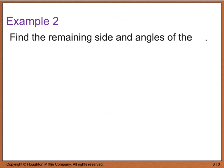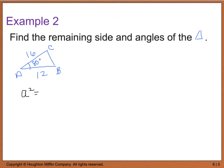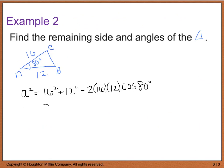For example 2, we find the remaining sides and angles of the given triangle ABC. We have two side lengths and an angle, but we can't use the law of sines because we don't have a side opposite the given angle. So using the law of cosines, side A squared equals b squared (16 squared) plus c squared (12 squared) minus 2 times 16 times 12 times cosine of 80 degrees. Make sure you're in degree mode. Simplifying and taking the square root gives A equal to 18.26.